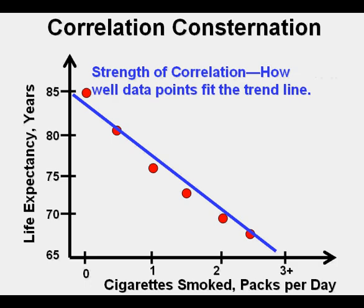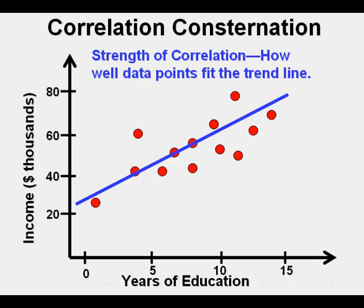Now we will examine the concept of strength of correlation. Strength of correlation has to do with how tightly the points of the scatter plot fit the trend line. A scatter plot where the points fit the line pretty tightly is said to have strong correlation, whereas one where the points do not fit as tightly along the line of best fit is said to have weak or lower correlation.